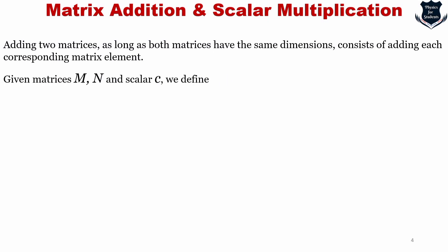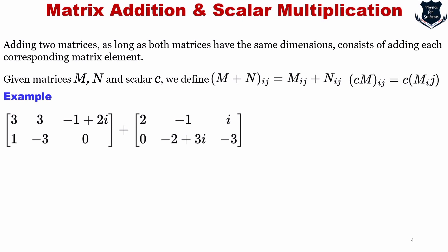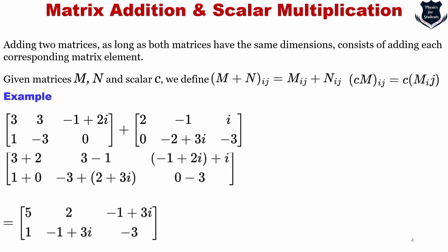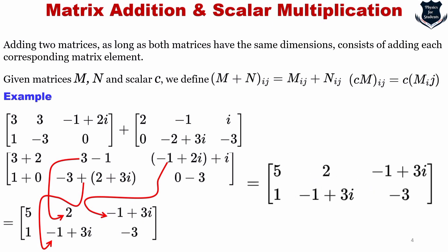Given matrices M and N and a scalar C, we can define: (M + N) sub ij equals the i-th and j-th component of M added with the i-th and j-th component of N, and C·M sub ij equals C times M sub ij. In the example, we add component by component — such as 3 plus 2, 3 minus 1 — following the M plus N rule, adding each i and j component of M with N to get the result.